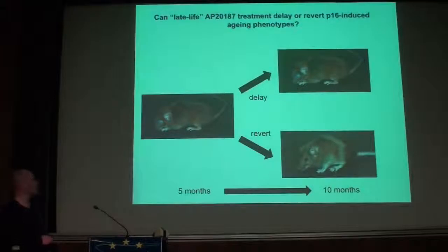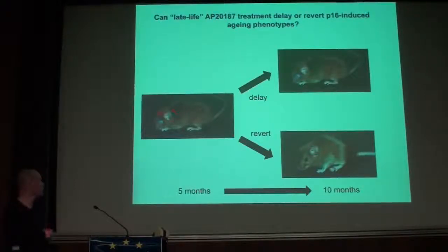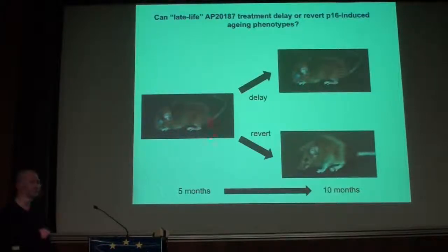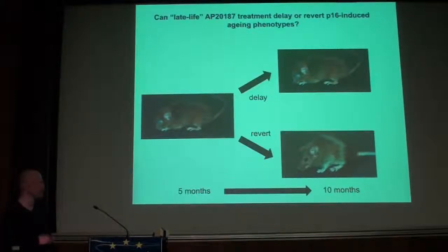We've now shown that lifelong treatment starting from weaning age up to ten months can delay certain aging phenotypes. But what if we start treating these animals at five months of age — when they have already acquired lordokyphosis, cataracts, and lost a substantial amount of fat? Can we delay further progression, or is it even possible to improve these aging-related phenotypes?